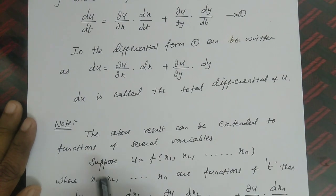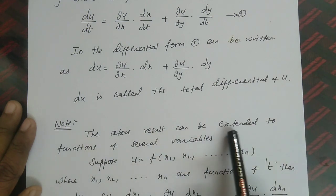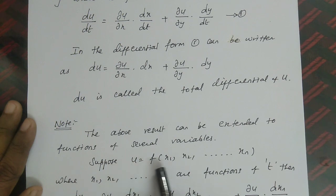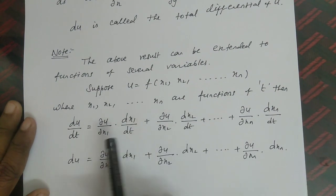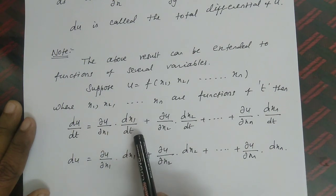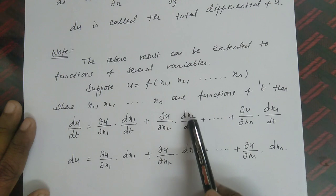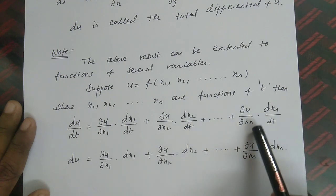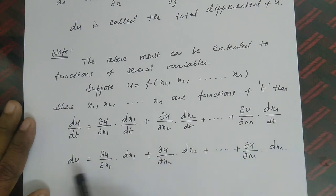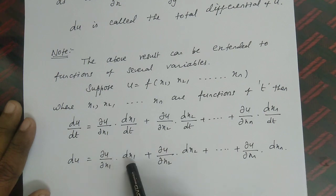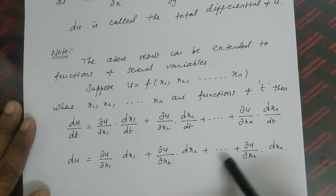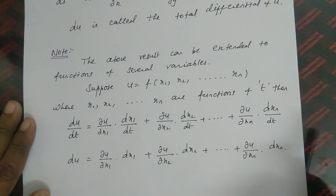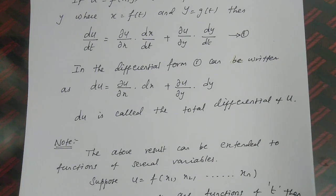The above result can be extended to functions of several variables. Suppose u is a function of x₁, x₂, ..., xₙ, where x₁, x₂, ..., xₙ are functions of t. Then du/dt = (∂u/∂x₁)(dx₁/dt) + (∂u/∂x₂)(dx₂/dt) + ... + (∂u/∂xₙ)(dxₙ/dt). That is, the total differential du = (∂u/∂x₁)dx₁ + (∂u/∂x₂)dx₂ + ... + (∂u/∂xₙ)dxₙ. This result is called the total differential coefficient.